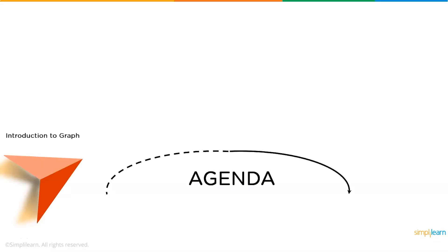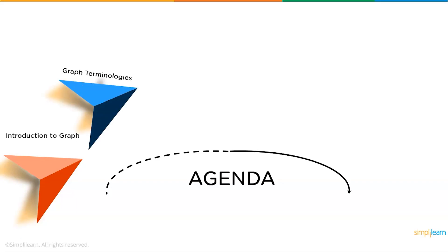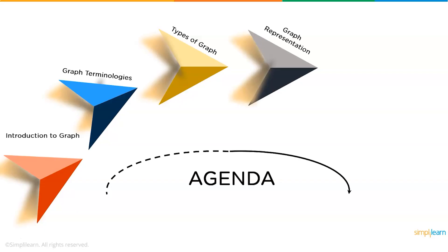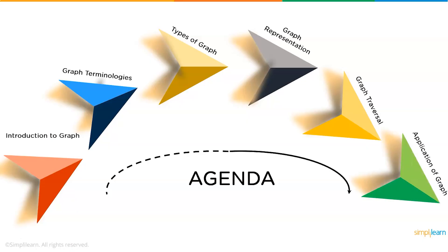We will be discussing a brief introduction to graphs first, followed by graph terminologies. Up next we will see the types of graphs available in data structures, after that graph representation, then graph traversal, and finally the application of graphs. Let's begin with the first topic: a brief introduction to graphs.